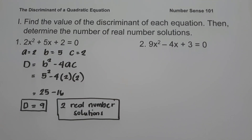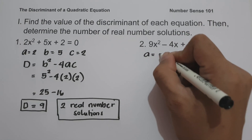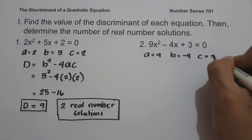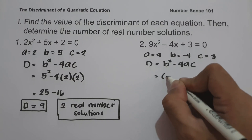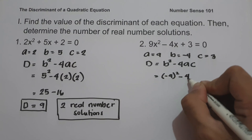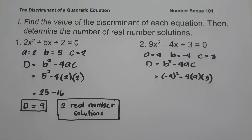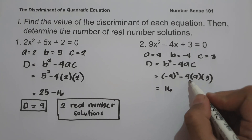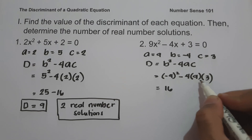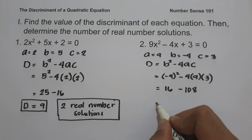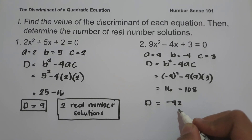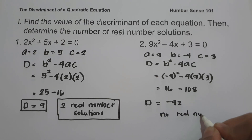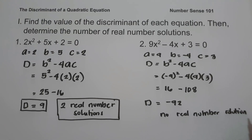On number two, we have 9x squared minus 4x plus 3 equals 0. We identify A as 9, B as negative 4, and C as 3. The formula for the discriminant is D equals B squared minus 4AC. Substituting: negative 4 squared minus 4 times 9 times 3. Negative 4 squared is positive 16; negative 4 times 9 is negative 36; negative 36 times 3 is negative 108. And 16 minus 108 is negative 92. Since the discriminant is a negative number, or less than 0, we have no real number solution.